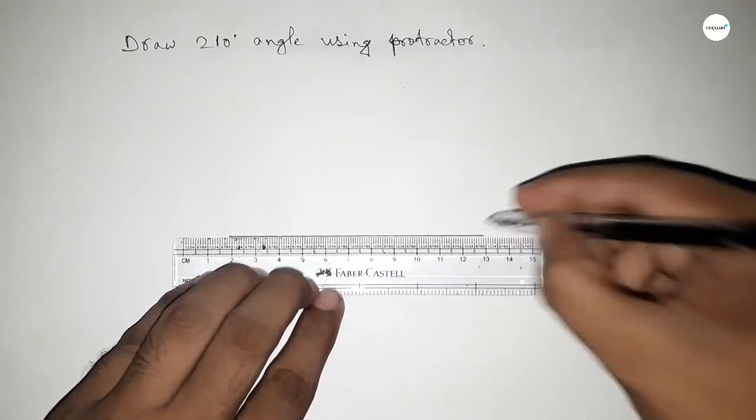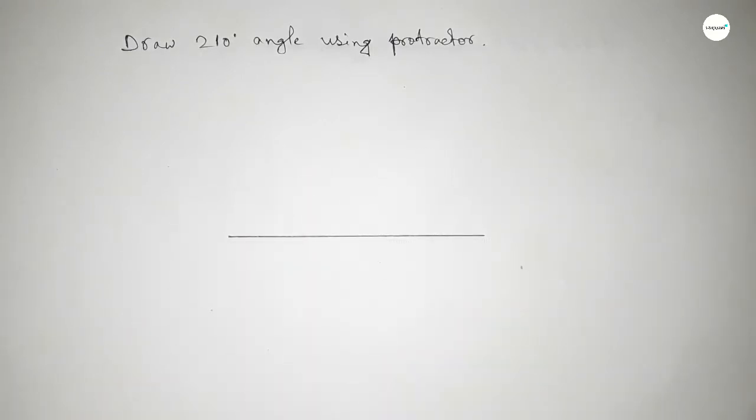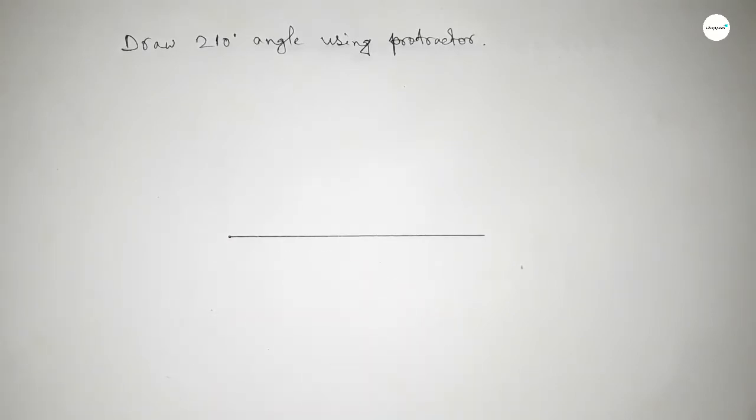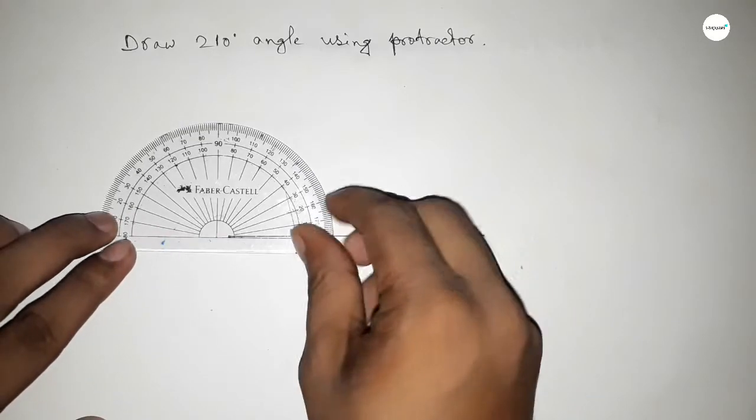So first drawing a line here. Okay, now pointing out here to draw 210 degree angle on this point.